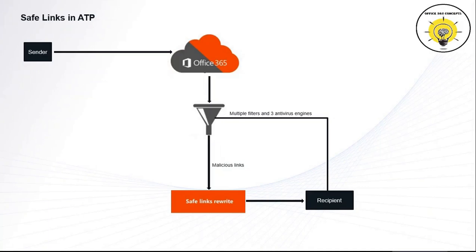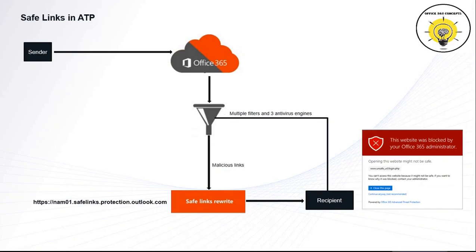Safe Links is a feature of Defender for Office 365 that provides URL scanning and rewriting of URLs within emails. Safe Links scanning occurs in addition to the regular anti-spam and anti-malware policies within Exchange Online Protection. Safe Links scans incoming email for non-malicious hyperlinks. Every scanned URL is rewritten using the Microsoft standard URL prefix, which is added as a prefix to every URL found within the email. This is called rewriting the URLs using Safe Link policies. When a user clicks on a URL, Safe Links immediately checks it before opening the website. If the URL is on the blocked list, the user will see a blocked URL warning page.